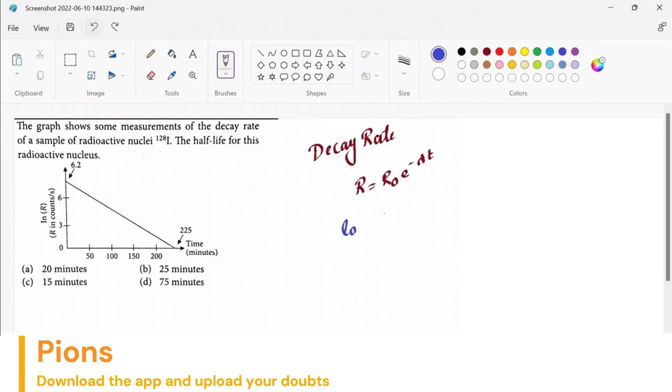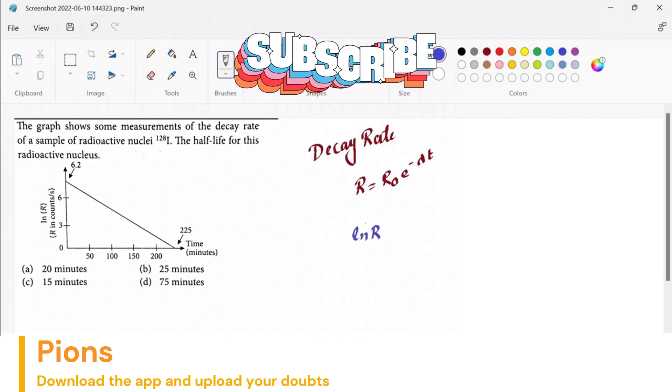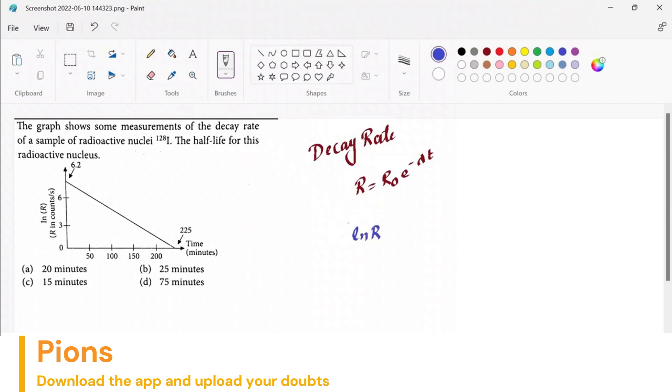ln because they have given natural log in the graph. So ln R equals ln R₀ plus ln(e^(-λt)). Let me remind you: log of A times B is log A plus log B.